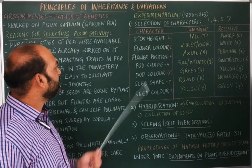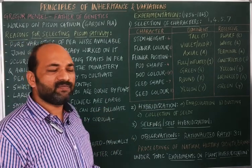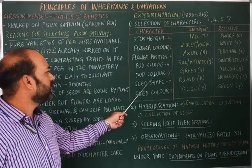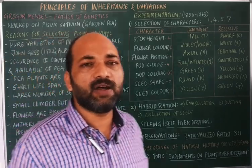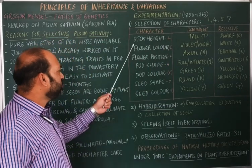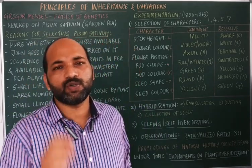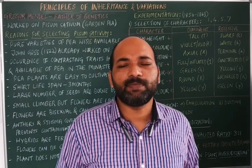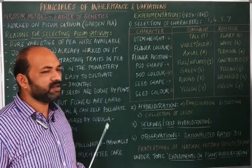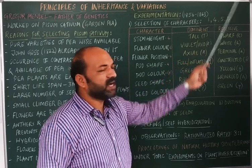Mendel selected seven characters: height of the stem or plant, color of the flower, position of the flower or pod, shape of the pod, color of the pod, shape of the seed, and color of the seed. These are the seven characters selected by Mendel. The genes of these seven characters are located on four chromosomes in the pea plant. In a pea plant, there are 14 chromosomes total, but the characters selected by Mendel had their genes located on chromosomes 1, 4, 5, and 7.